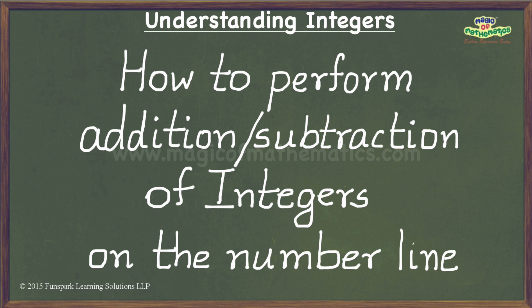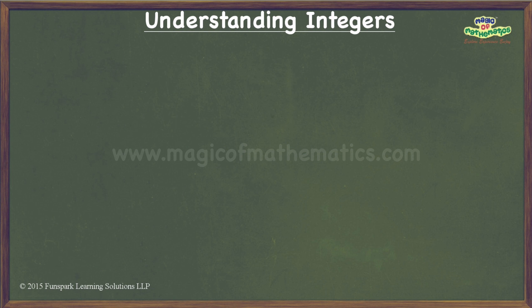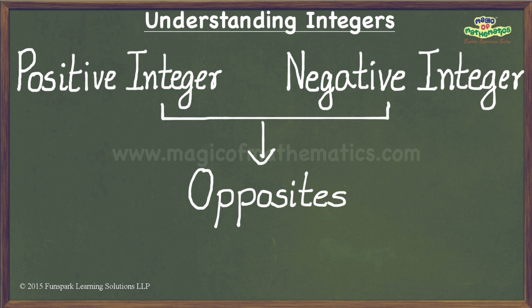Now that we know what we will be dealing with in this video, let us get down to the task at hand. Before I present the intuitive rules for performing addition and subtraction of integers on the number line, I would like to state a well-known fact: conceptually, positive and negative integers are opposites of each other. In other words, a negative integer is conceptually the opposite of the positive integer of the same magnitude. If you are not familiar with this concept, you should watch my video where I deal with the question: what are integers and why do we need them?